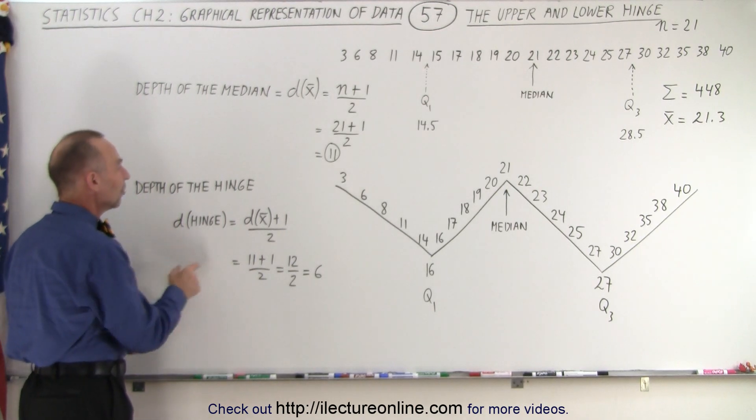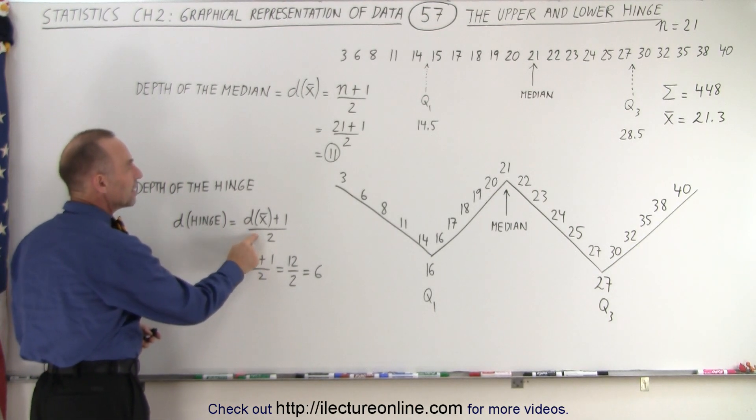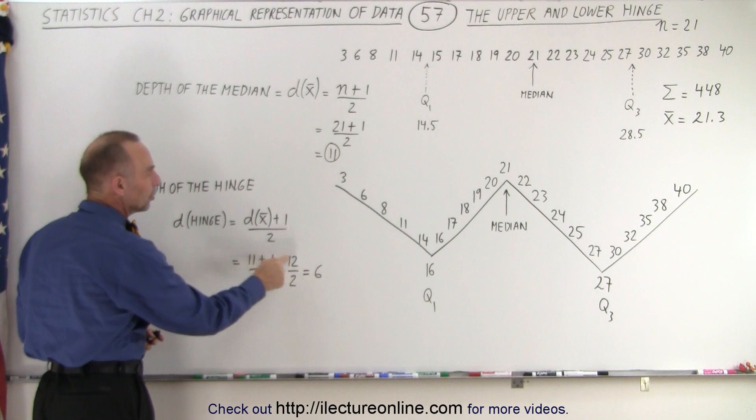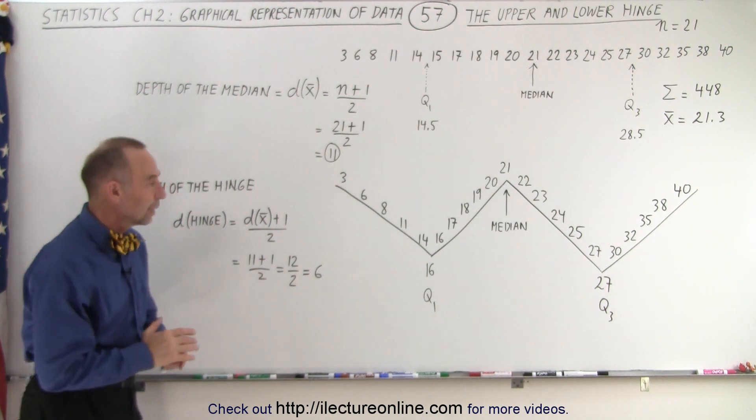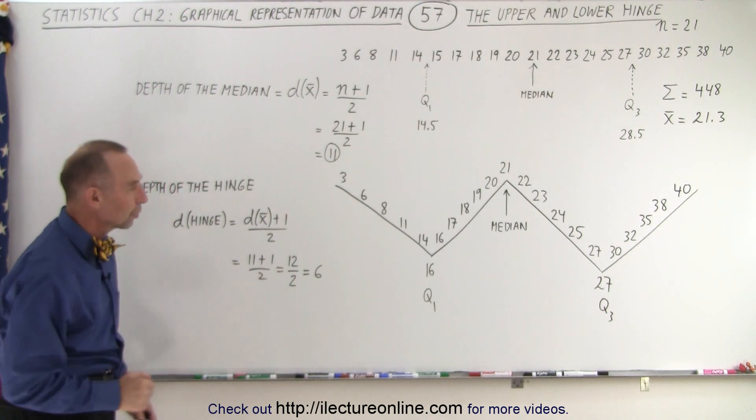You can also find the depth of the hinge by taking the depth of the median, adding 1 to that, dividing by 2, and you get the depth of the quartile, or the hinge as we call it.